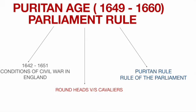We will close the session here. From the next class we will explain the Neoclassical Period, further bifurcated into three parts: the Restoration Age, the Augustan Age (the Age of Pope), and the Enlightenment or Age of Sensibility (the Age of Samuel Johnson). We will also discuss the Popish Plot, the Glorious Revolution, the Exclusion Crisis, and the Jacobite Uprising. If you liked the session, please hit the like button, subscribe to the channel, and leave your feedback in the comments. See you in the next class — thank you.